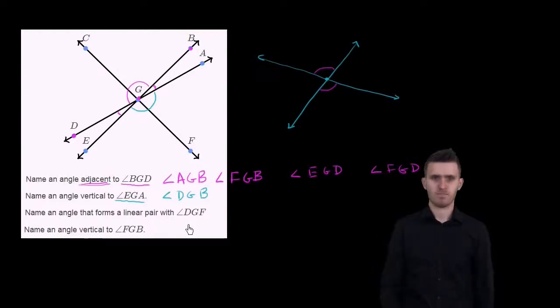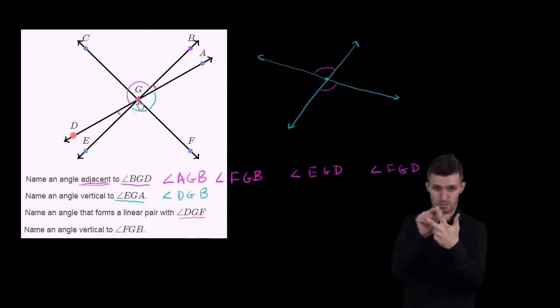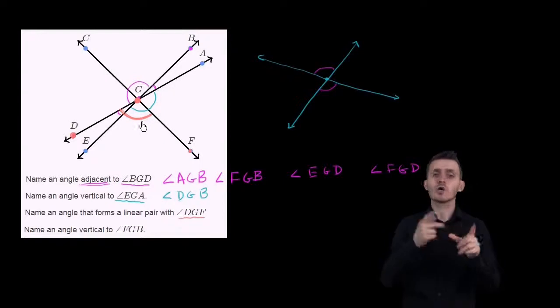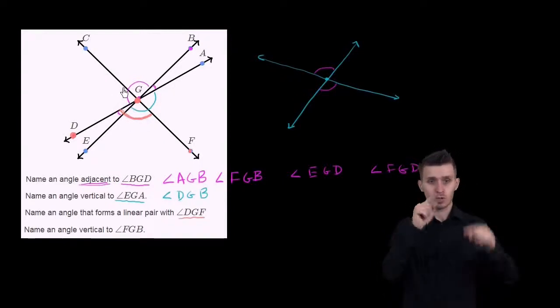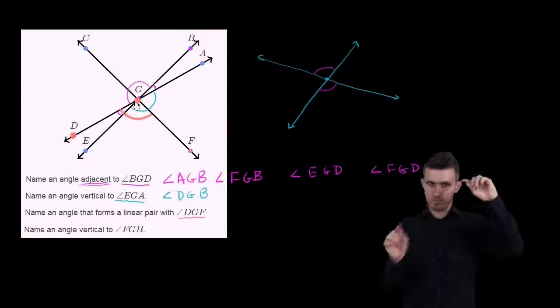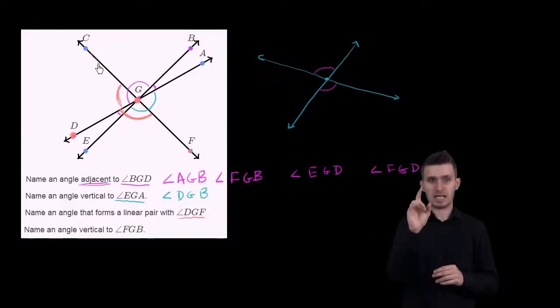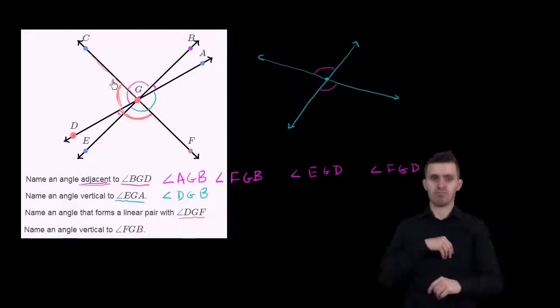Name an angle that forms a linear pair with angle DGF. So that's this angle right over here. An angle that forms a linear pair will be an angle that is adjacent where the two outer rays combined form a line. For example, if you combine angle DGF, which is this angle, and angle DGC, then their two outer rays form this entire line right over here. So we could say angle DGC.